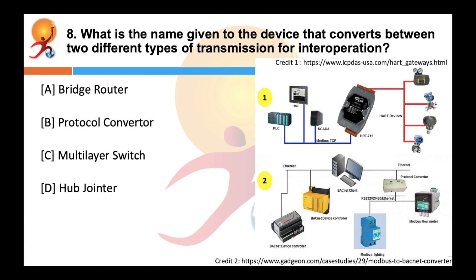What is the name given to the device that converts between two different types of transmission for inter-operation? Correct answer is protocol converter. A protocol converter is a device which is used to convert standard or proprietary protocol of one device to the protocol suitable for the other device or tools to achieve the interoperability.